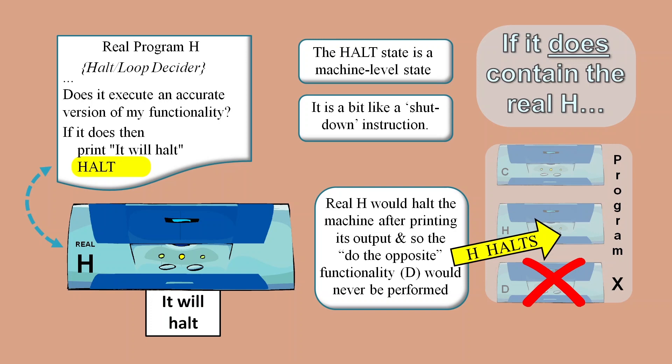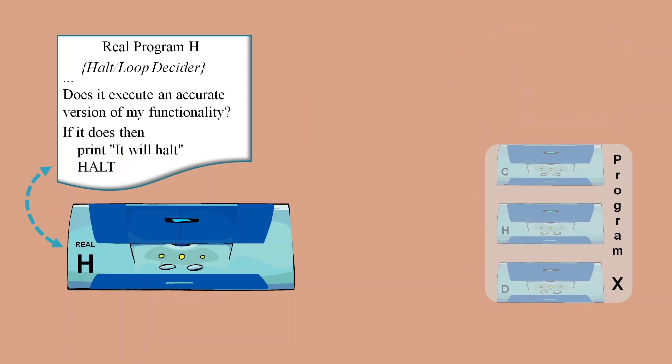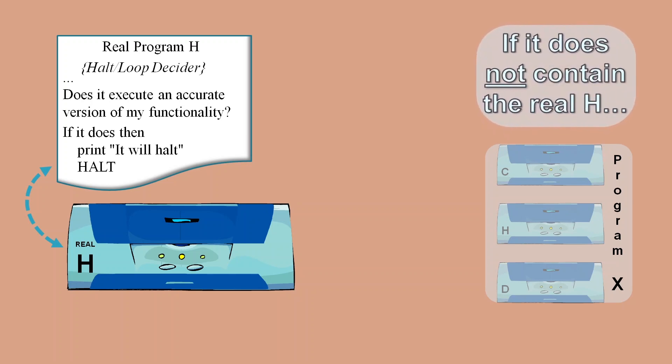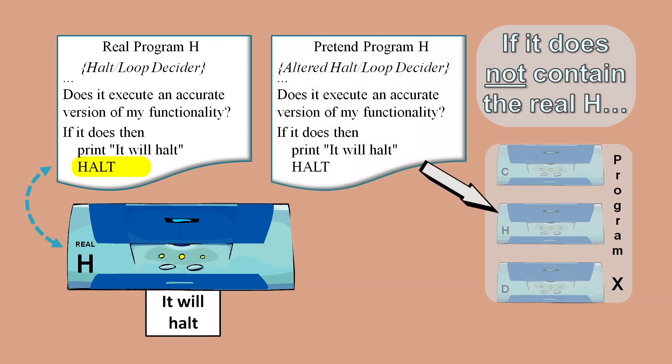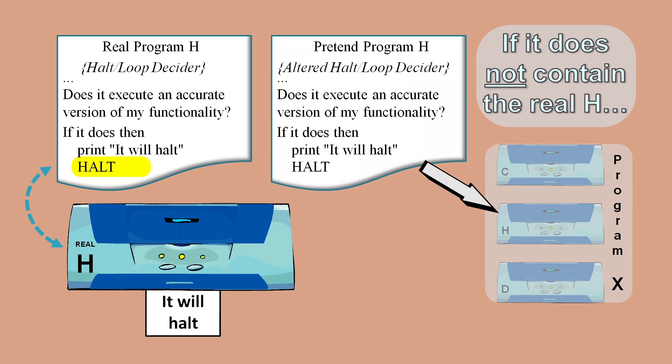The only other possibility that remains is that program X contains some attempt to produce the same functionality as H but without the machine level halting. Remember, the problem for program X is that the real H can say it will halt and then force processing to stop with a machine level halt. So in order to prevent that machine halt happening, we would need to use an altered copy of program H inside program X that we'll call pretend program H. And to ensure that we can continue processing after this pretend program H, we would need to get rid of any machine level halt instructions.